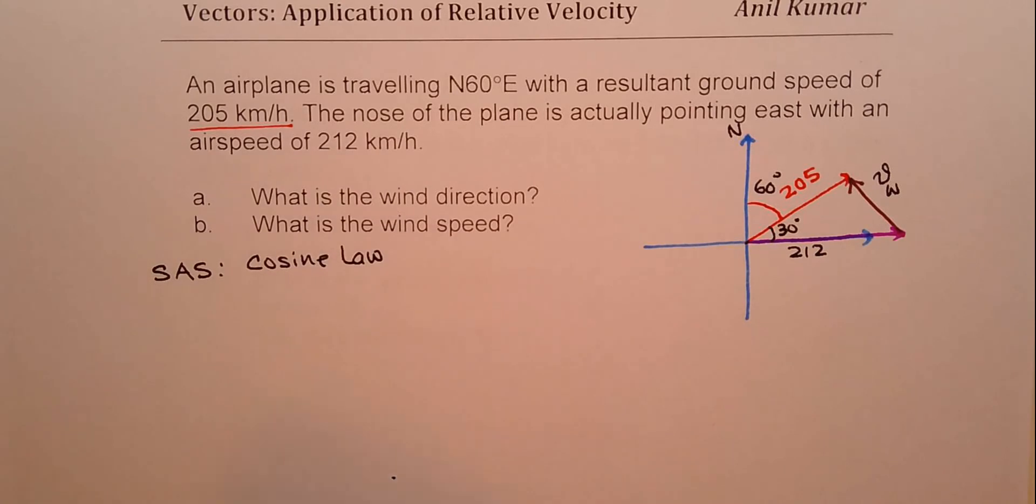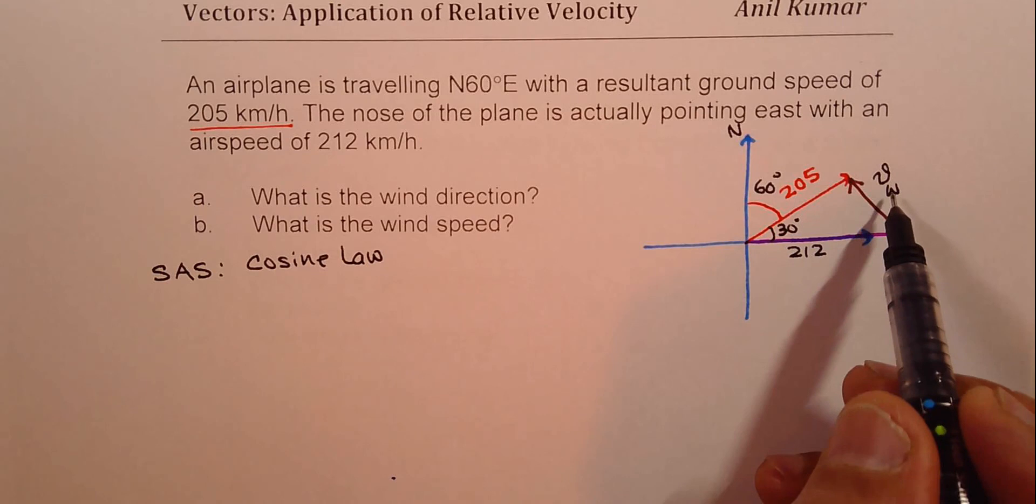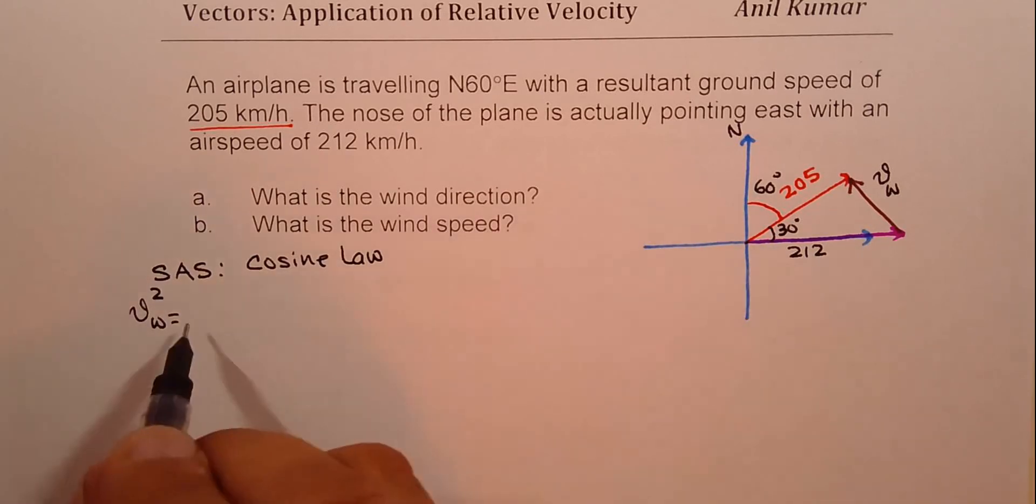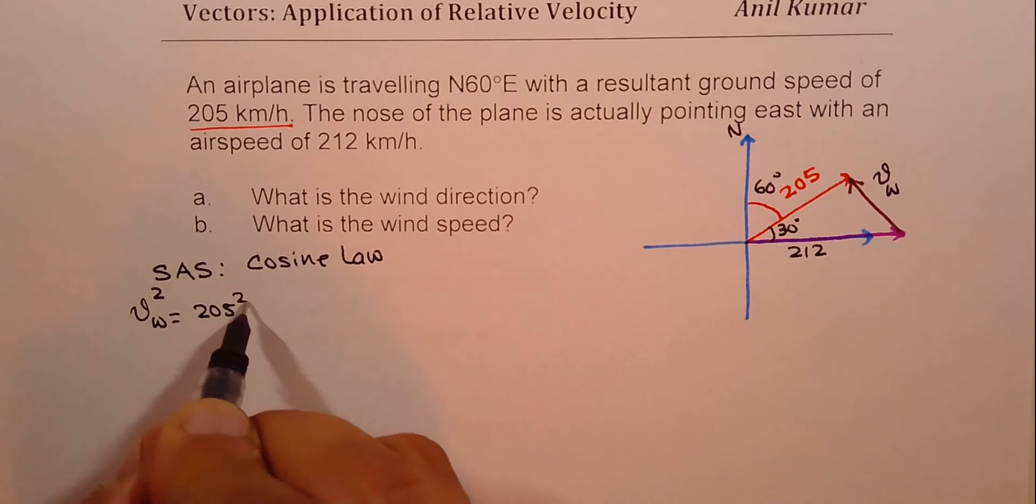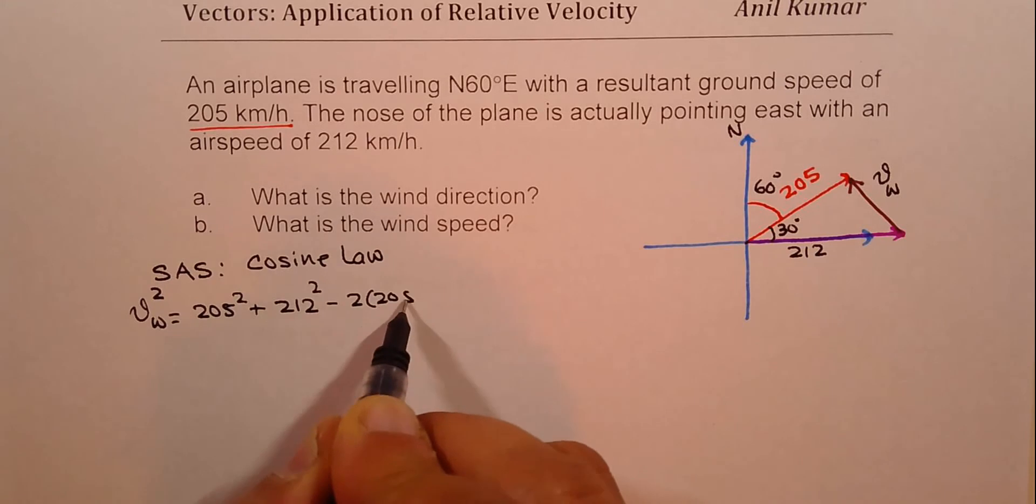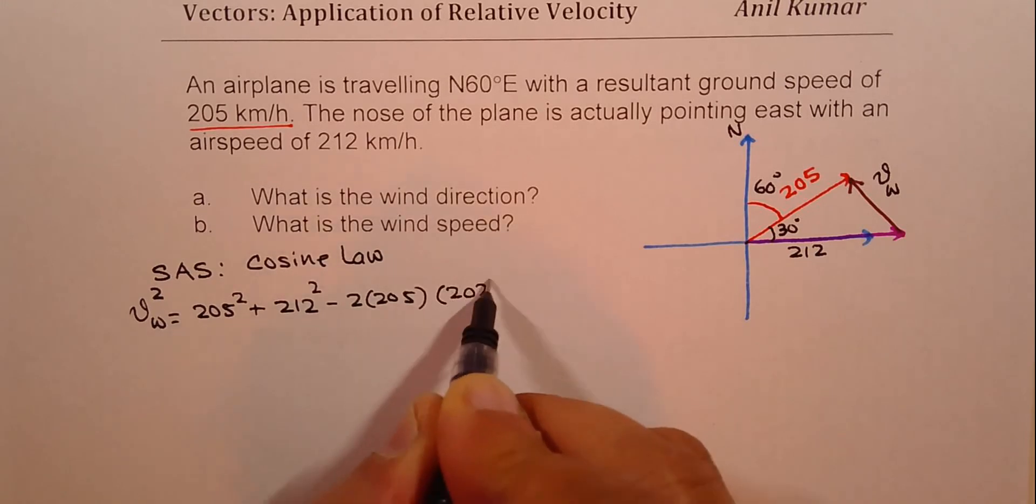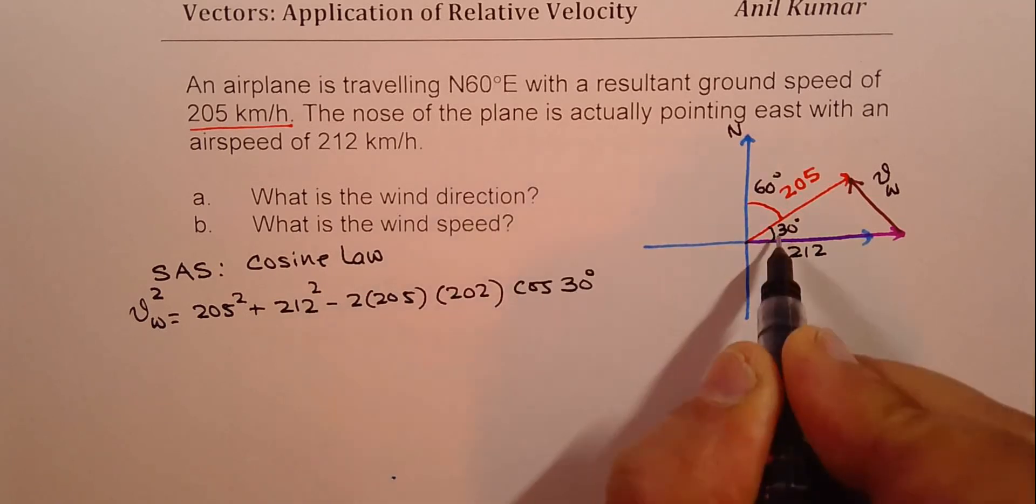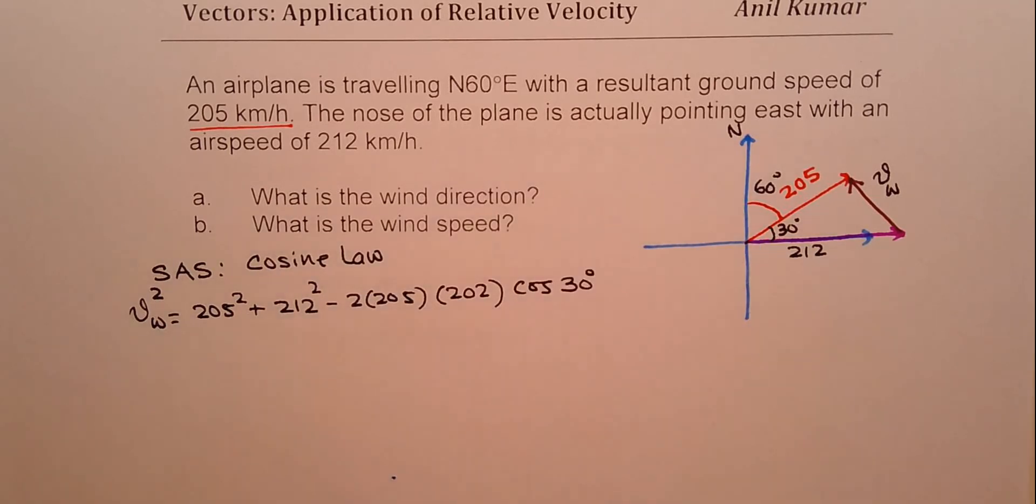So applying cosine law, we can find the wind velocity. So wind velocity, let me write down square of this, is equal to square of 205 plus square of 212 minus 2 times 205 times 202 times cos of angle 30 degrees, right? So you get angle 30 degrees, which it makes with the east.